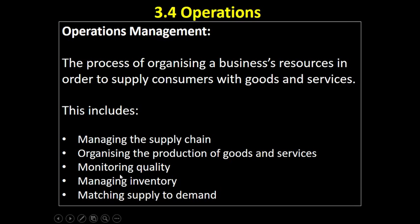So that would include managing the supply chain, organising the production of goods and services, monitoring the quality of goods and services as they're being produced, managing inventory levels — in other words stock levels. Are we keeping a high level of stock in case there's sudden changes in demand, or do we have a low level of stock and try to minimise our costs? The trick is: how do we match our supply to demand? If there's changes in demand, can we meet that? Are we satisfying consumers with our current levels of output?